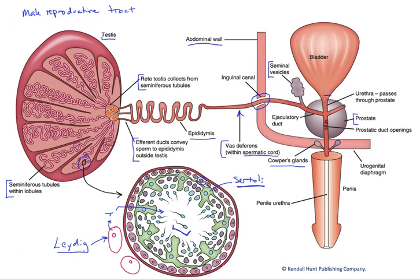The male reproductive tract is connected to the bladder, sharing the urethra with the urinary tract. We certainly would not want gametes traveling up into the bladder — that's called retrograde ejaculation. So during ejaculation, the neck of the bladder actually constricts, causing everything to travel in the correct direction and out of the body.